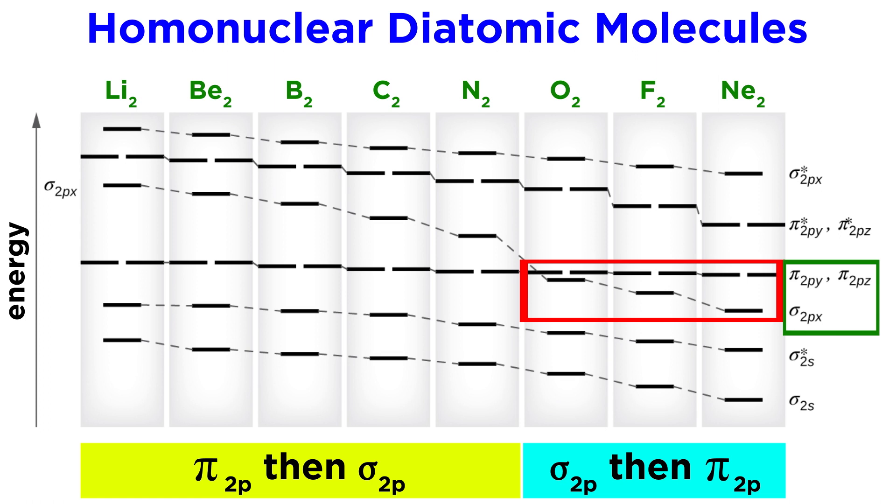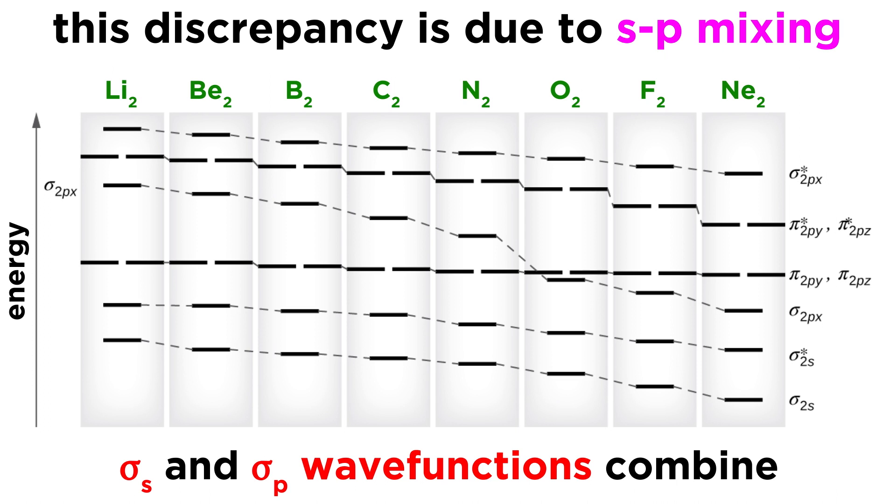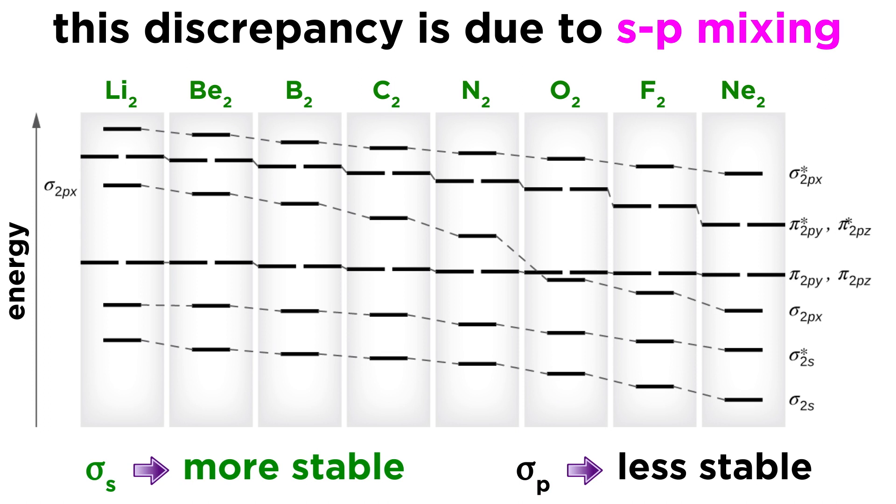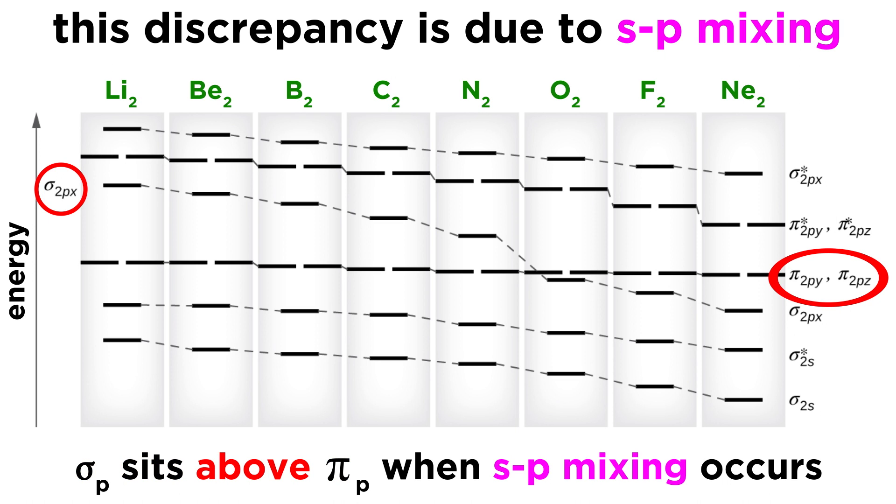But on the right, the sigma-2p bonding orbital dips below and thus will be filled first. This discrepancy is due to a phenomenon called S-p mixing, which influences the energies of these molecular orbitals. This happens when the sigma-s and sigma-p wave functions combine in such a way that the sigma-s orbital becomes more stable, and the sigma-p orbital becomes less stable.